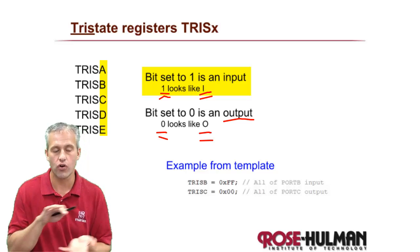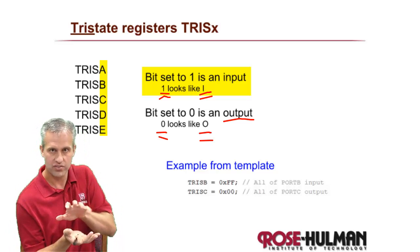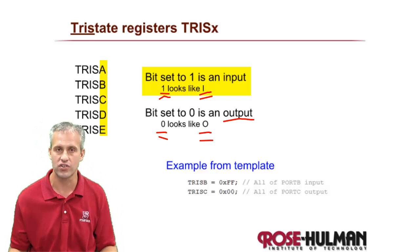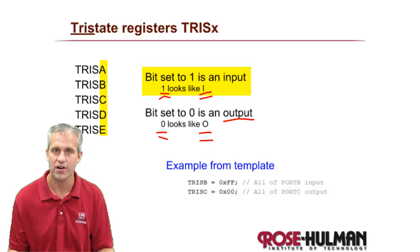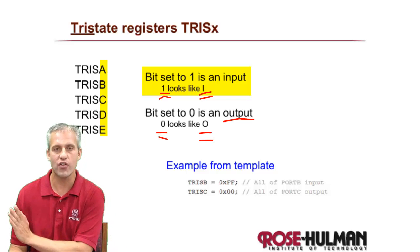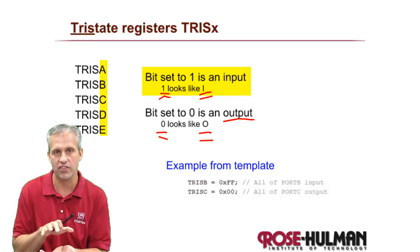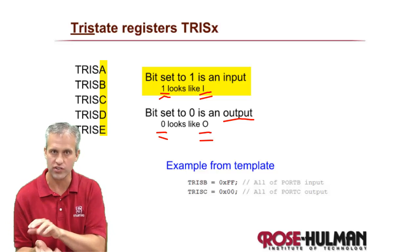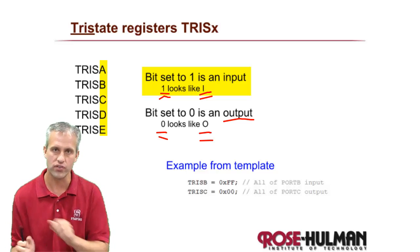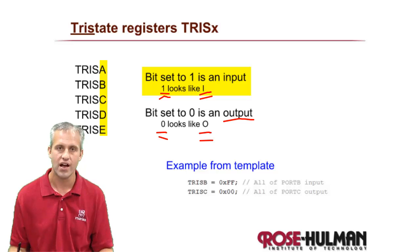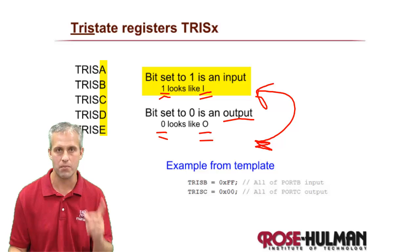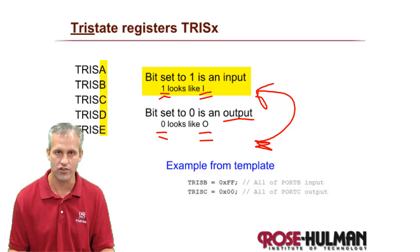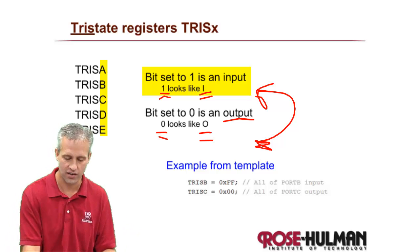Most microcontrollers work the exact opposite of this. PICs are unusual in that zero makes output. The reason other microcontrollers do it oppositely is because everything defaults to zero and they wanted pins to default to input. PIC is the only one that uses this easy-to-remember '1 looks like I' trick. I like that — it's nice.